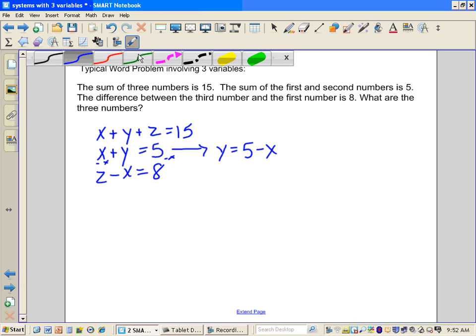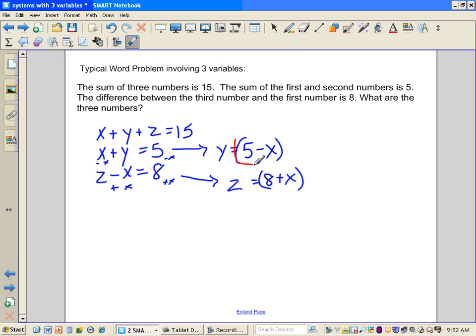So y is by itself, so now y is equal to this. If I get the z by itself by adding x again on both sides, this becomes z is equal to 8 plus x. So since y is equal to this, I'm going to put this in for this y value here, and since z is equal to this, I'm going to put it in for this z value.